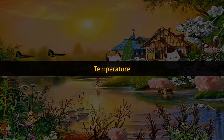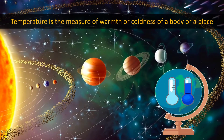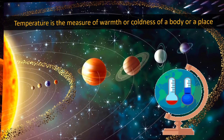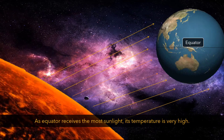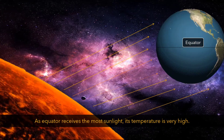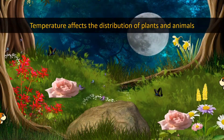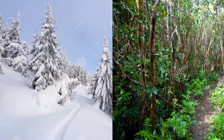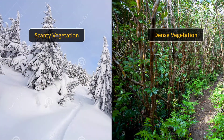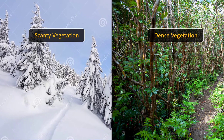Temperature is the measure of warmth or coldness of a substance or environment. It varies from place to place and substance to substance. Our Earth receives the maximum amount of sunlight near the equator, so it's hotter there. Temperature affects the distribution of plants and animals on Earth. Thus, the left part of the image has scanty vegetation, while in the right, vegetation is dense.